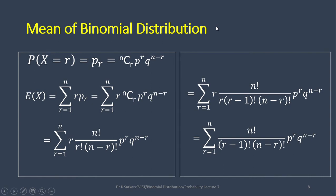Mean of Binomial Distribution. The PMF of binomial distribution is nCr * p^r * q^(n-r), and we know the expectation formula: E[x] = sum over r from 1 to n of r * P(r). We start from r=1 because the term r=0 has no contribution. P(r) = nCr * p^r * q^(n-r), and nCr = n! / (r! * (n-r)!). We write r! = r * (r-1)!, so the r's cancel, giving n! / ((r-1)! * (n-r)!) * p^r * q^(n-r).